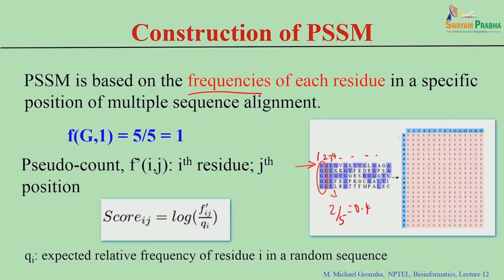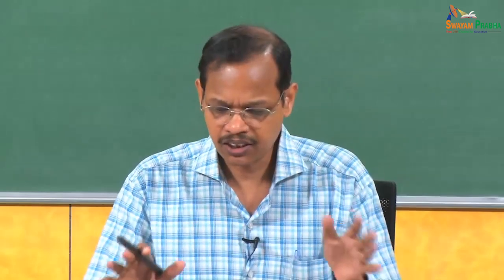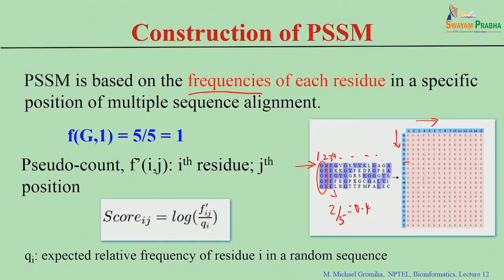For position 1, glycine occurs 5/5 times; for position 2, H occurs 5/5; for position 3, E occurs 5/5; for position 4, the counts are distributed: G 2 times, F 1 time, K 1 time, L 1 time. When constructing this matrix from several sequences, many cells will have zeros. To avoid zeros when taking logarithms, a pseudo count is added.